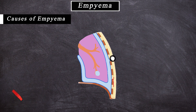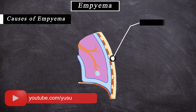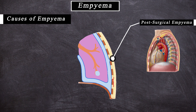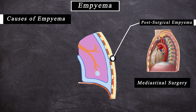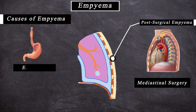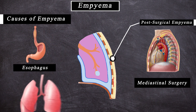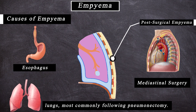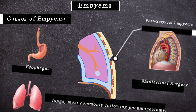Post-surgical Empyema may occur after certain surgeries. It represents 20% of cases of Empyema and can follow surgery to the mediastinum, oesophagus, and lungs, most commonly following pneumonectomy.